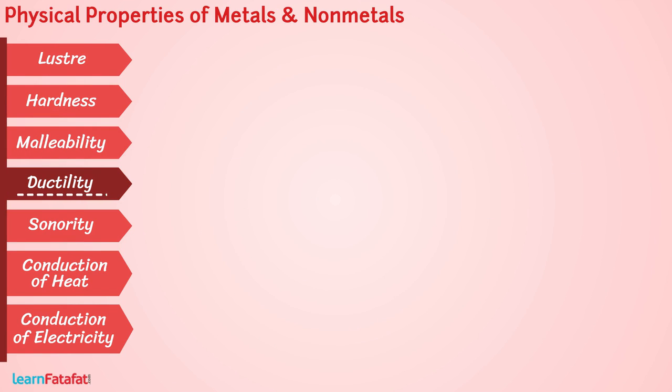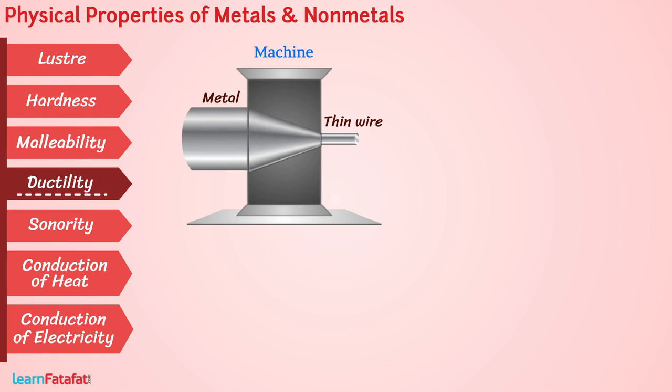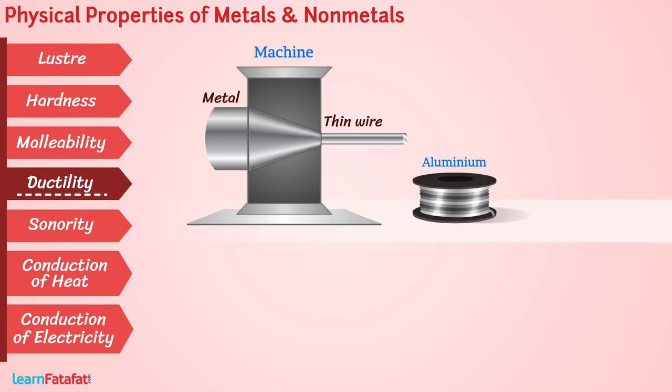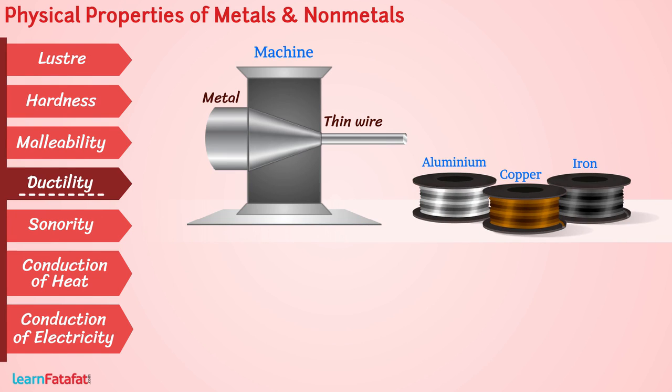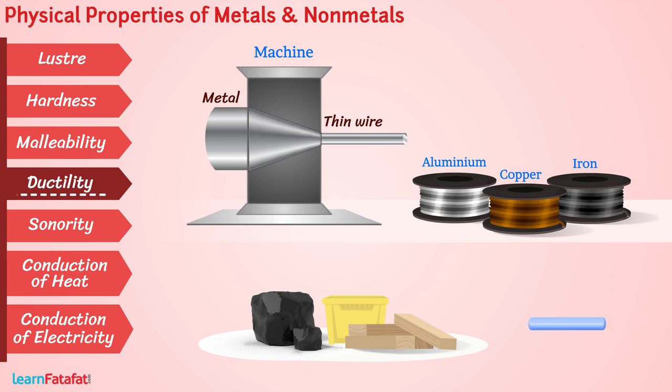Ductility: Another interesting property of metals is the ability to form thin wires. This is called ductility. With this property, you can see wires of aluminum, copper, and iron. Non-metals do not show this property and break if we try to form wires.